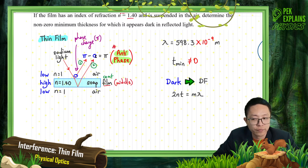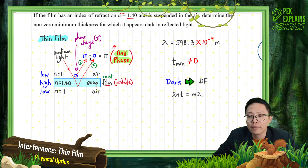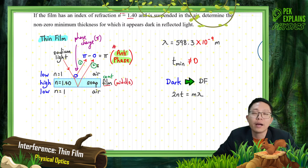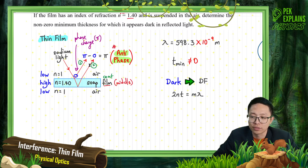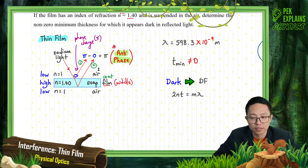Wave 1 has one phase change (pi), wave 2 has no phase change (0). Pi minus 0 equals pi radian difference. That means these two waves are anti-phase — only one of them got a phase change, making them anti-phase sources.